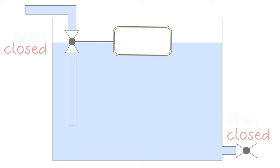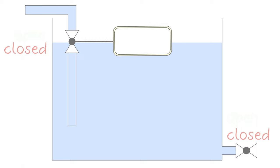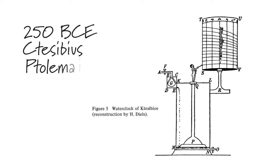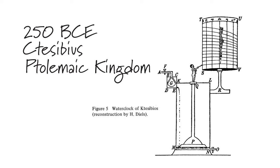According to the classical scholar Hermann Diels, the concept of the float valve dates to approximately 250 BC, when the Greek inventor and mathematician Ctesibus used it to regulate the level of water in a water clock in the Ptolemaic kingdom. We see again that timekeeping was a major influence in the development of control systems.